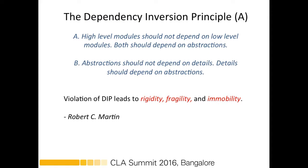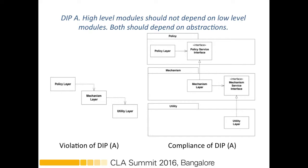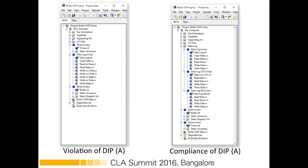The next principle is the Dependency Inversion Principle. It's about inverting dependencies so that high-level modules no longer depend on low-level ones. The utility layer uses the data of the mechanism layer, and the mechanism layer depends upon the policy layer. If you have to make a change or add functionality to any one of them, the whole structure may change. To avoid this, we add an interface between two layers — a policy service interface and a mechanism service interface — and they all depend upon the abstraction.